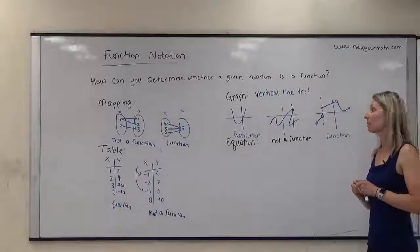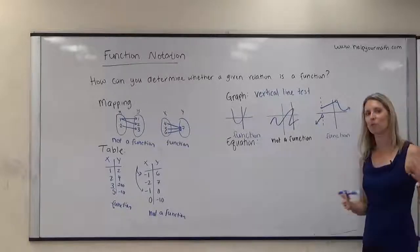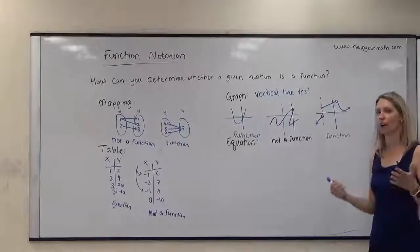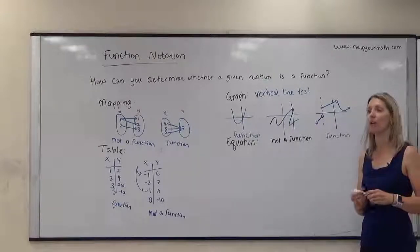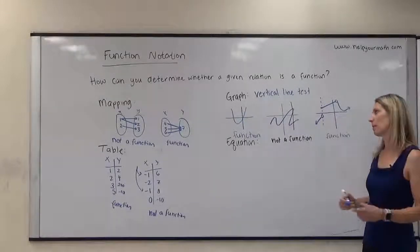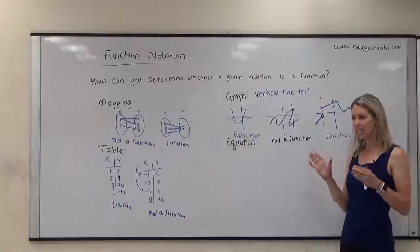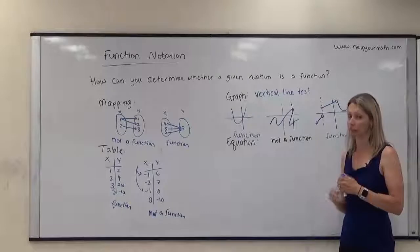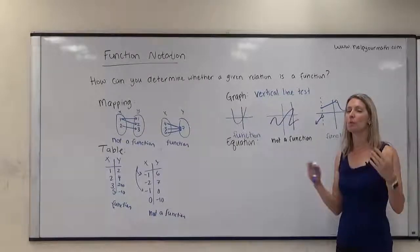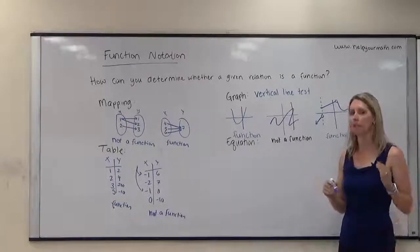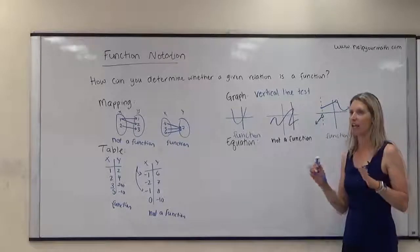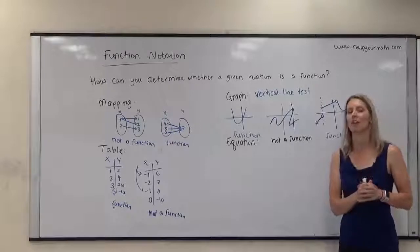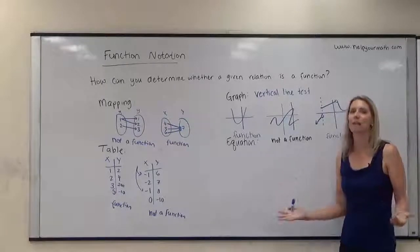The last thing we could be given is an equation. Equations are a little bit trickier to determine whether the relation is a function or not. The best approach I've come up with is: if you can easily isolate y, then it is probably a function. If you have to do something weird to get y by itself, it is probably not a function.